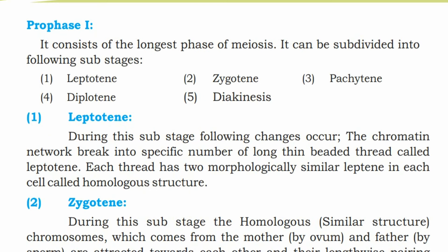Prophase 1 is the longest phase of meiosis. It can be subdivided into the following sub-stages: leptotene, zygotene, pachytene, diplotene, and diakinesis.